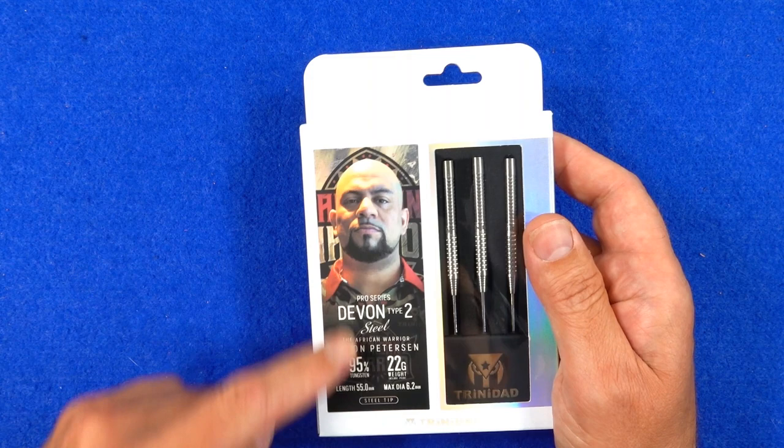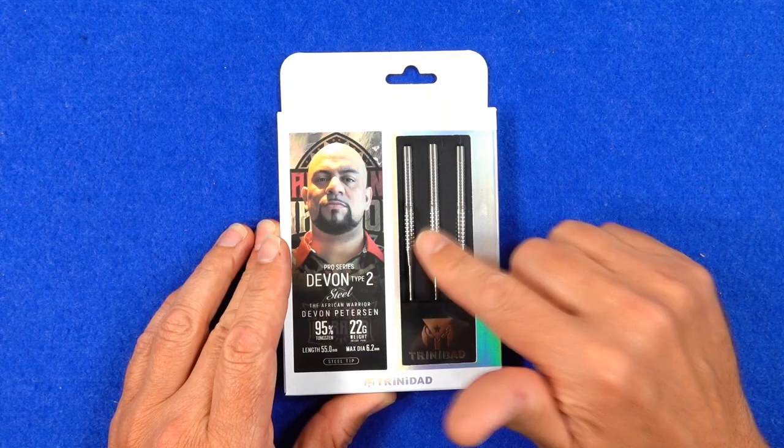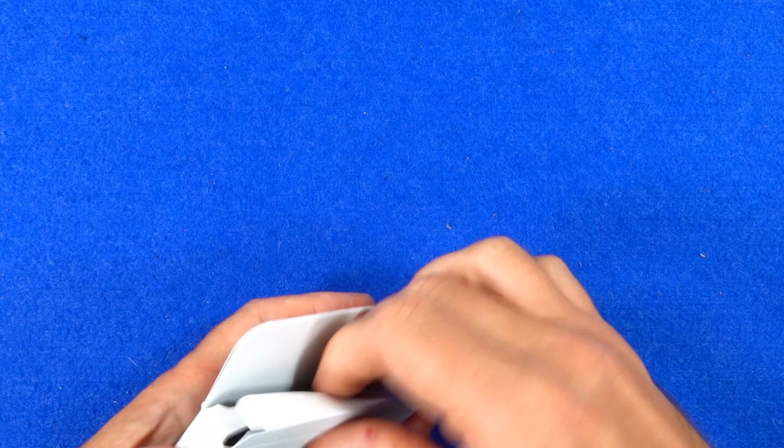So the darts come in this rather neat package. It's a cardboard with a textured thing on it, and you got all the info and obviously a picture of Devon on the left hand side and the window on the right displaying the darts.